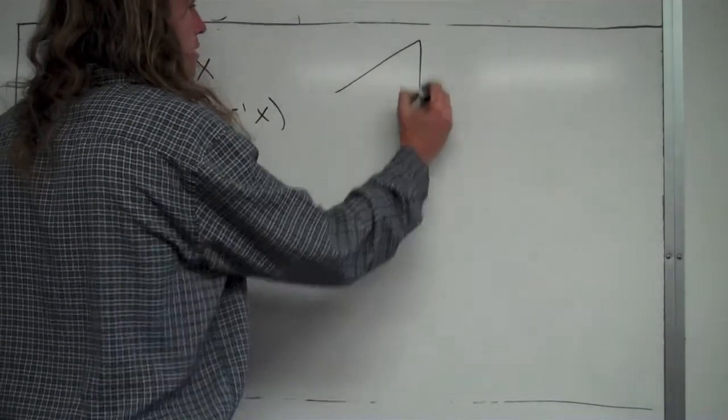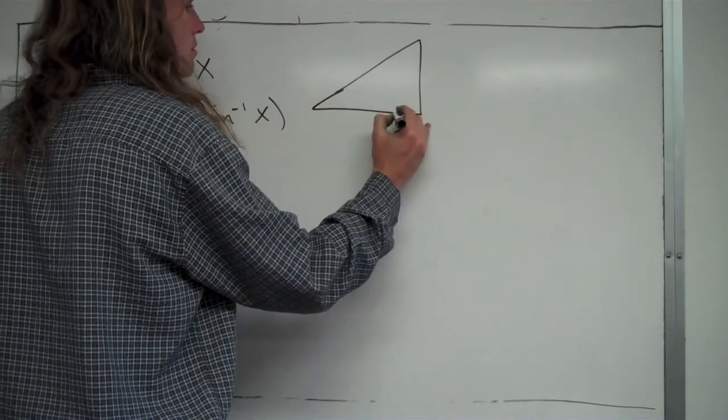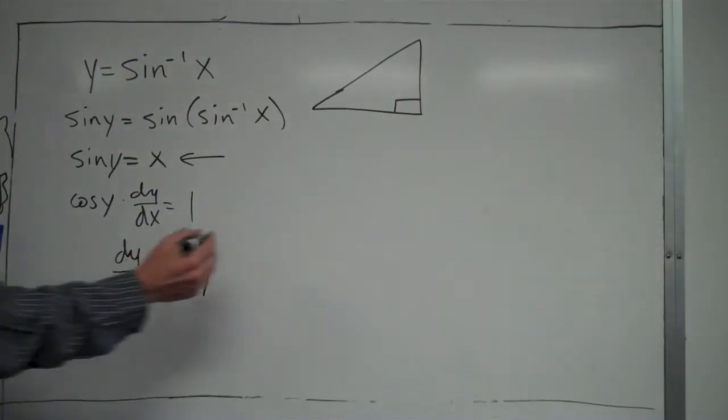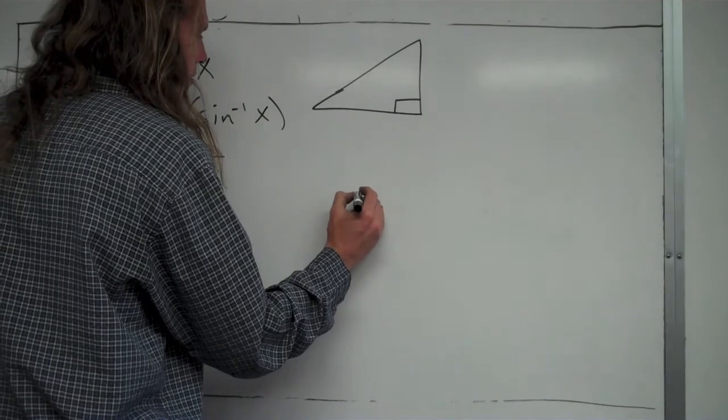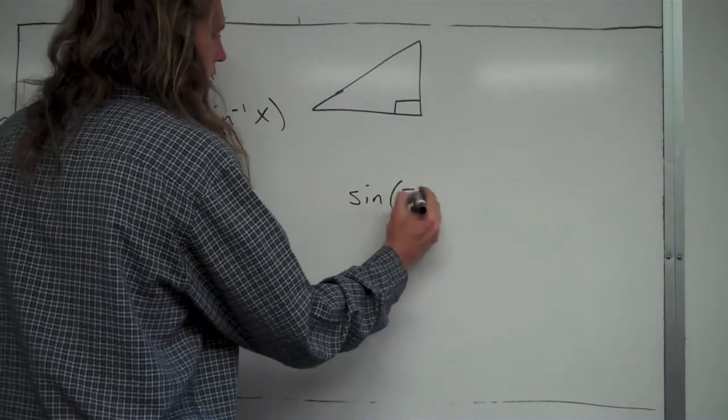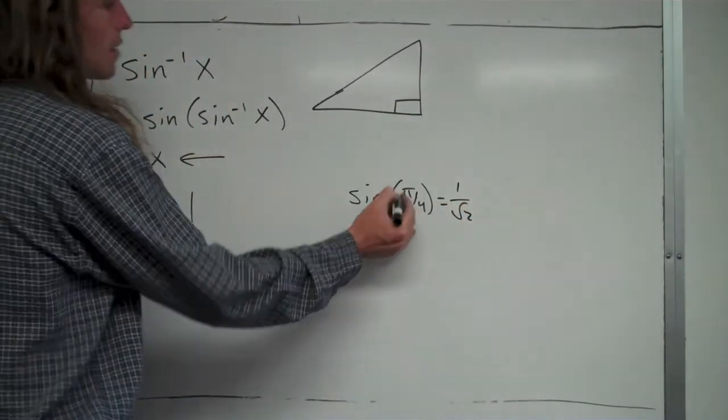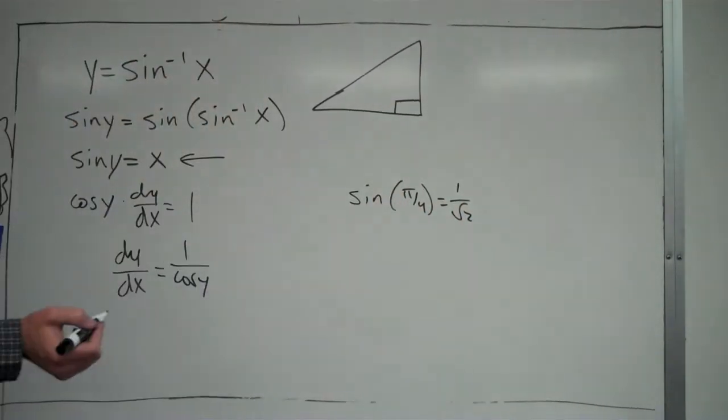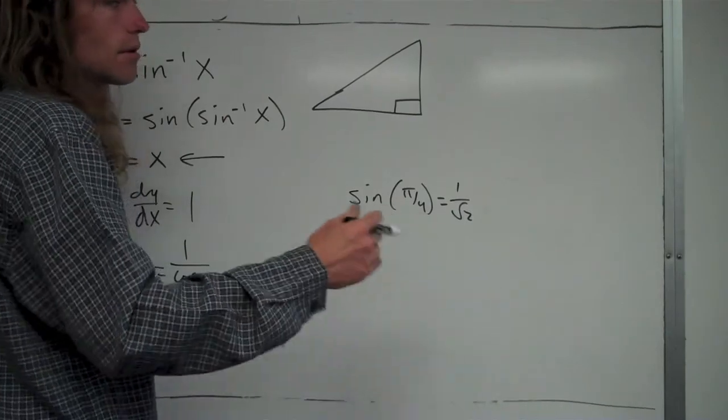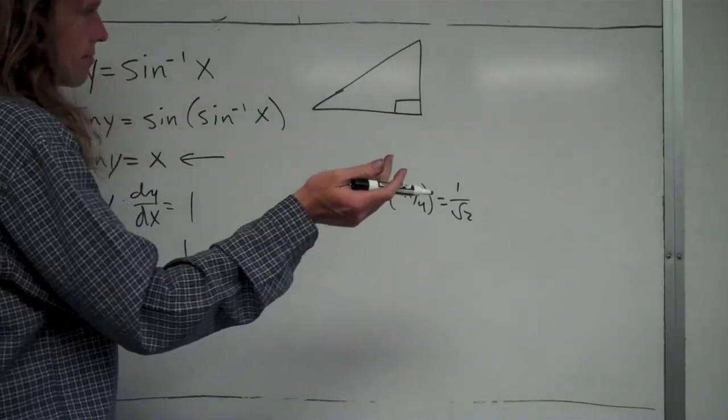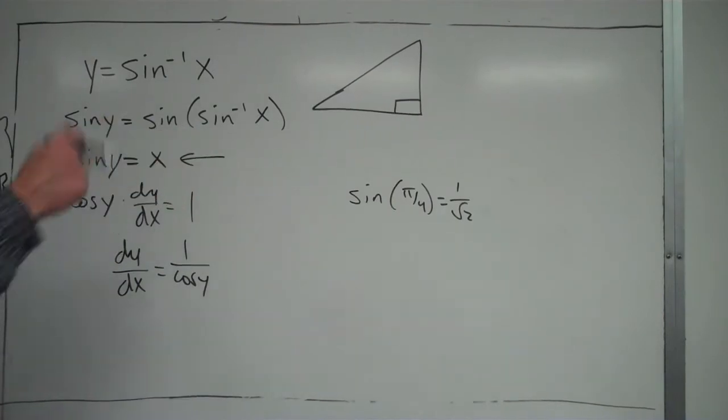If you think of it right here, like if you have something like sine of π/4 equals like 1 over √2, the π/4 represents an angle in a triangle, and the 1 and √2 represent the ratio of the side lengths that are opposite over the hypotenuse for sine. For other trig functions, it's different ratios.